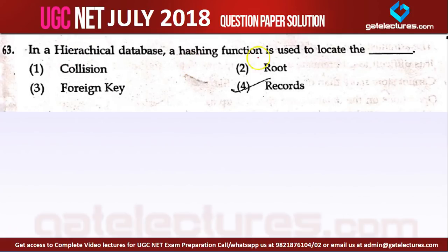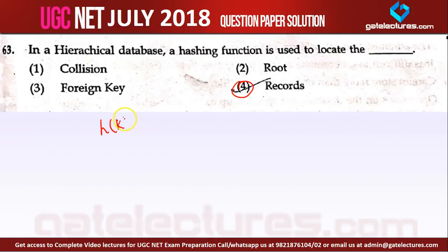Then, in a hierarchical database, a hashing function is used to locate what? We use the hashing function as an alternative to indexing. In indexing, we take key values and make an index of the records, so with a key value you can directly access the record from the hard disk. Similarly, with a hash function, we apply it to the key of the table and can directly jump to the record without needing to scan records sequentially. Indexing and hashing are used to improve the speed of access in the database. So option 4 is the right answer.